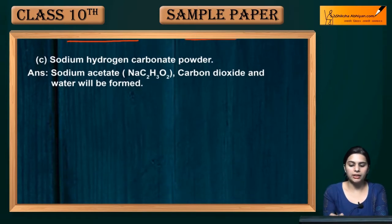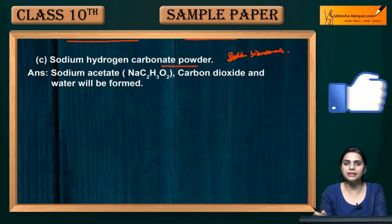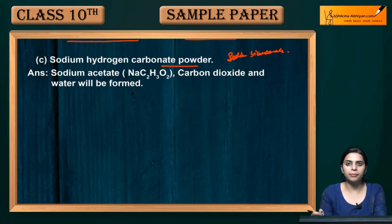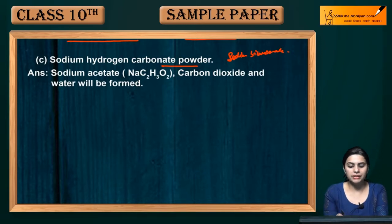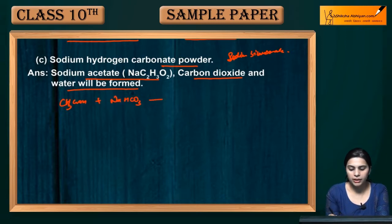Next is sodium bicarbonate (NaHCO₃). When you add acetic acid to sodium bicarbonate, an acid-base reaction takes place. A salt will form and carbon dioxide gas will be released. The reaction is: CH₃COOH + NaHCO₃ →